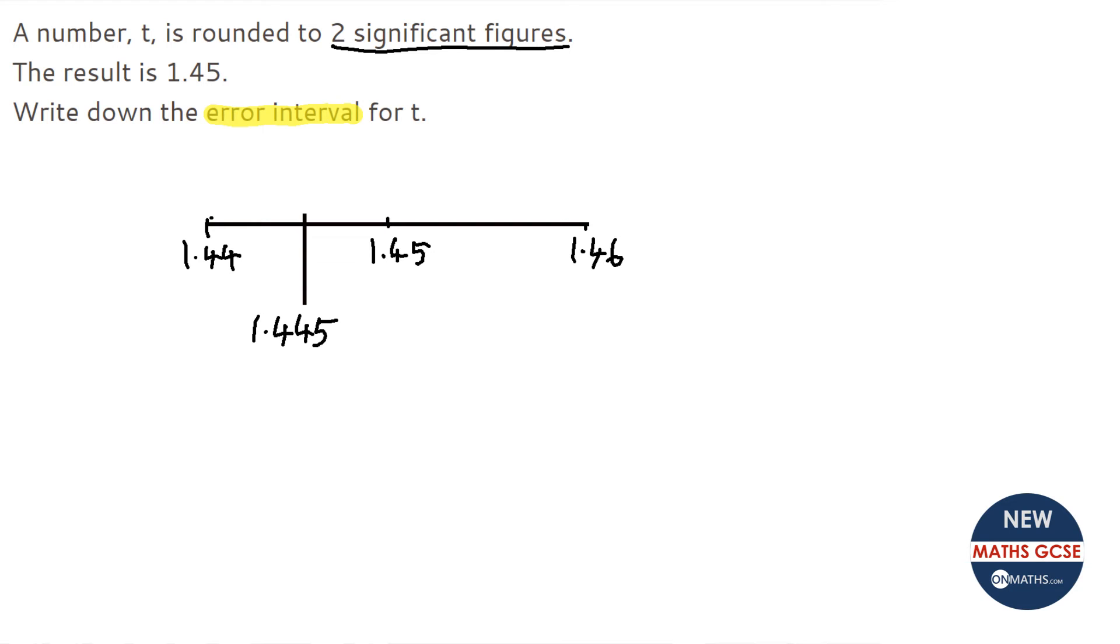What's the highest it could have been? Well again that's going to be halfway between 1.45 and 1.46, so the highest it could have been is 1.455.